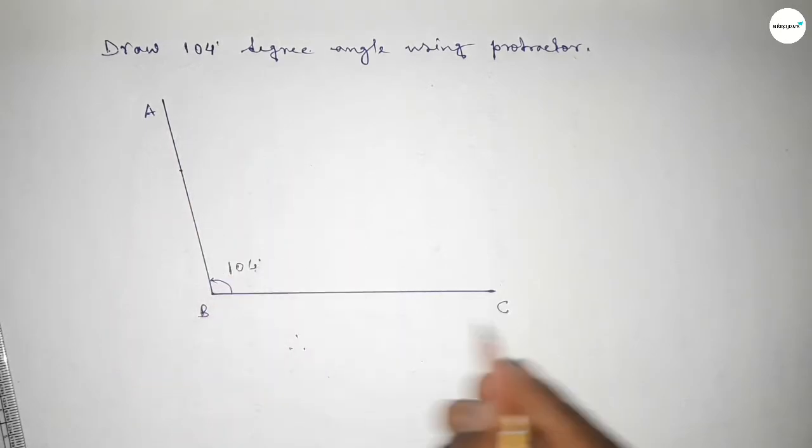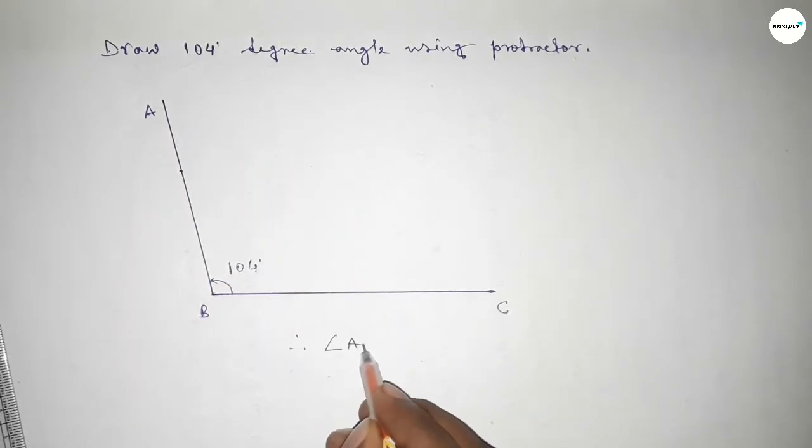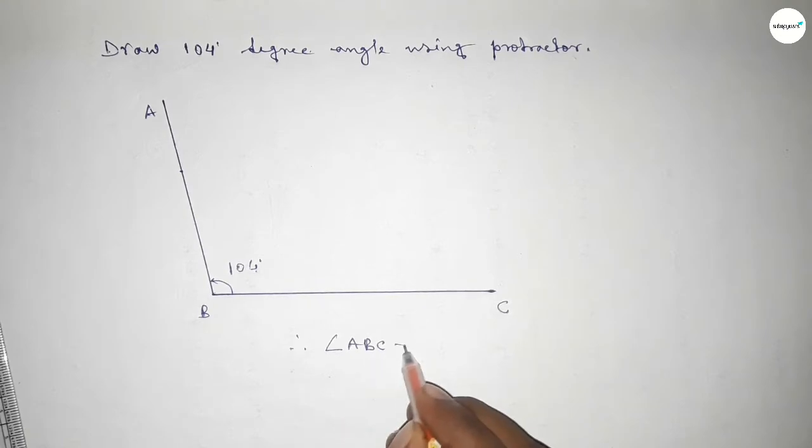angle ABC equal to 104 degree angle. That's all, thanks for watching. If this video is helpful to you, please share it with your friends. Thanks for watching.